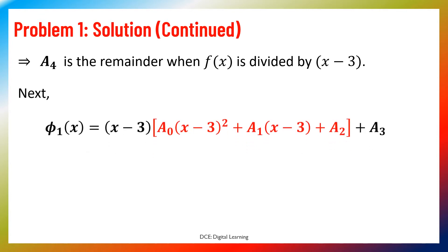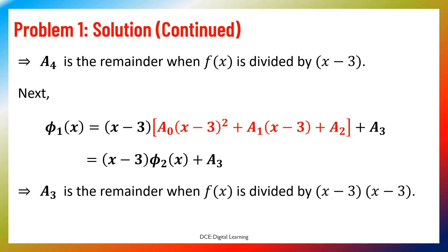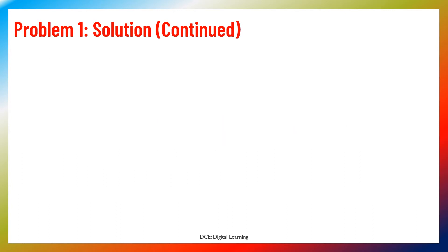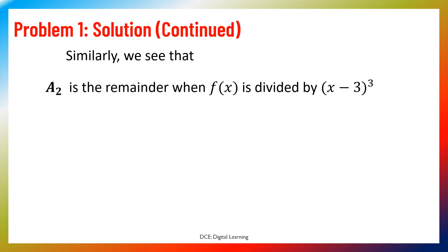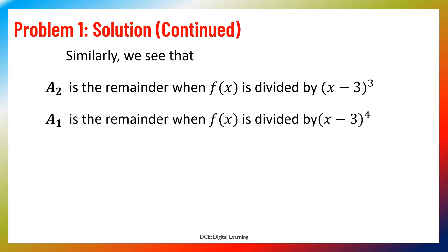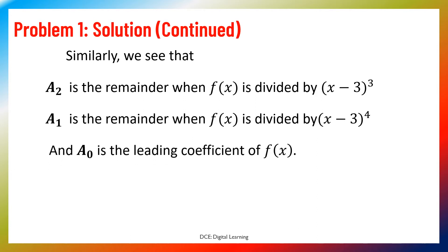Similarly, π₁(x) equals (x−3) times [a₀(x−3)² + a₁(x−3) + a₂] + a₃, which implies a₃ is the remainder when π₁(x) is divided by (x−3). Similarly, a₂ is the remainder when f(x) is divided by (x−3)³, a₁ is the remainder when f(x) is divided by (x−3)⁴, and a₀ is the leading coefficient of f(x).